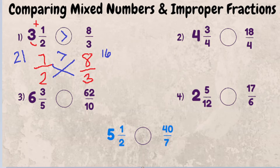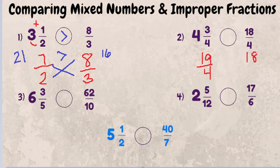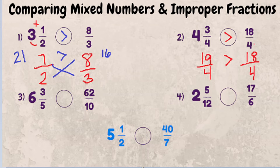Next example: let's compare four and three fourths to 18 fourths. Four times four is 16, plus three is 19, so 19 fourths is our improper fraction versus 18 fourths. Right off the bat, you can see the denominators are the same, so the easiest way to compare is to see which one has the larger numerator. 19 is larger than 18, so four and three fourths is larger than 18 fourths.